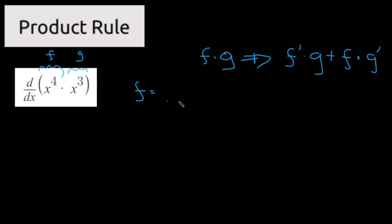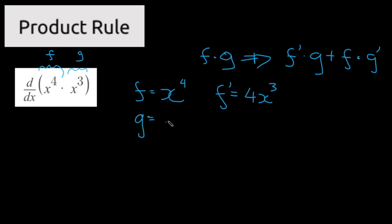So f equals x to the power of 4, and f prime — the derivative of f — is 4x to the power of 3. Then g is equal to x to the power of 3, and the derivative of g is 3x to the power of 2.